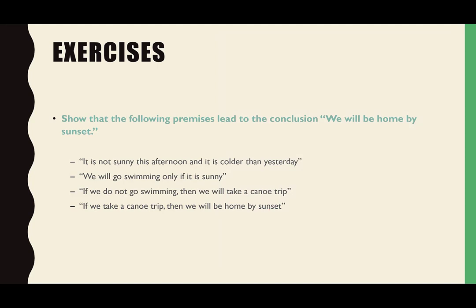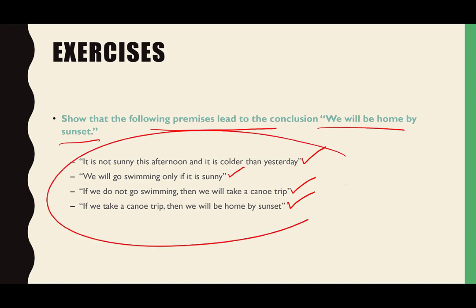Let's take a look at an actual proof. We want to prove that the following premises lead to the conclusion 'we will be home by sunset.' Looking at these we can probably make the conclusion without a formal mathematical proof, but let's walk through it. Premise one: it is not sunny this afternoon, and it is colder than yesterday. Premise two: we will go swimming only if it is sunny. Premise three: if we do not go swimming, then we will take a canoe trip. Premise four: if we take a canoe trip, then we will be home by sunset.